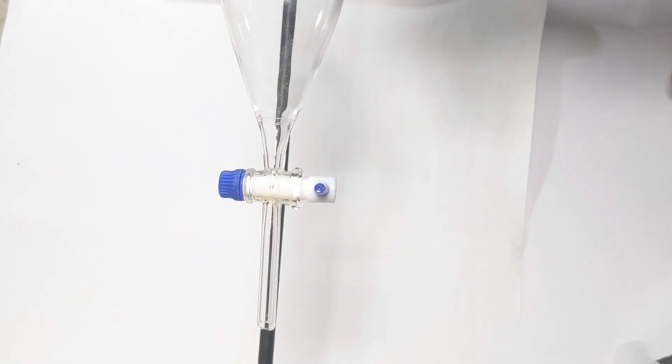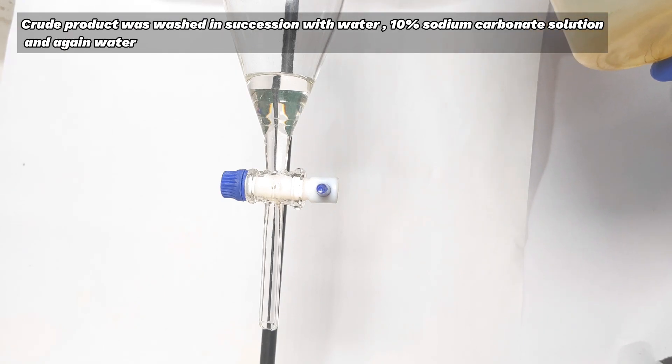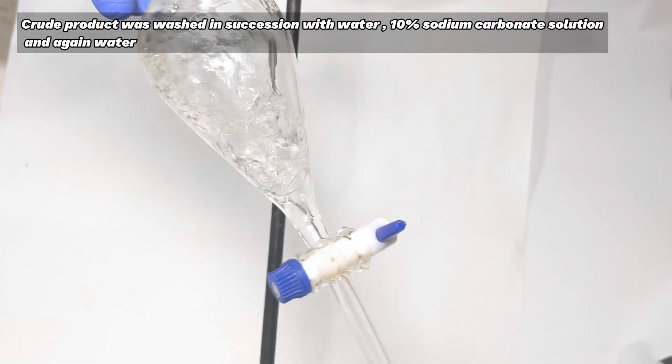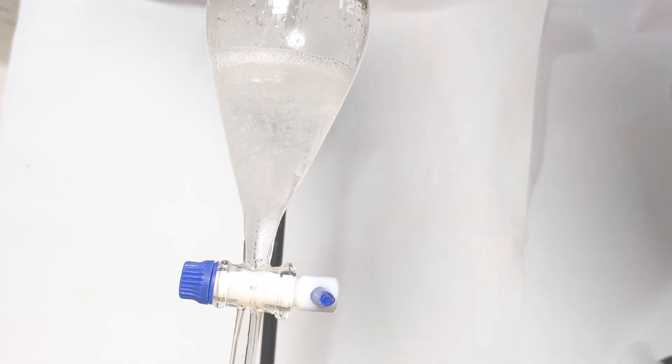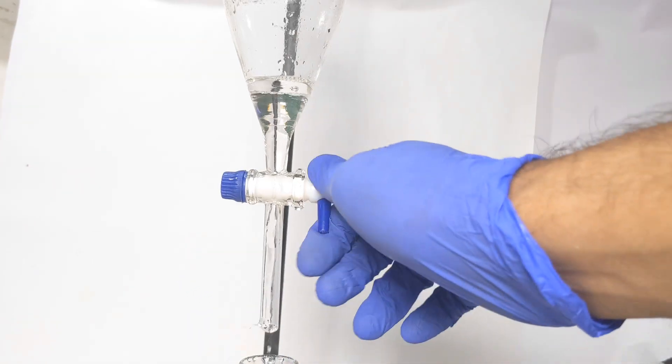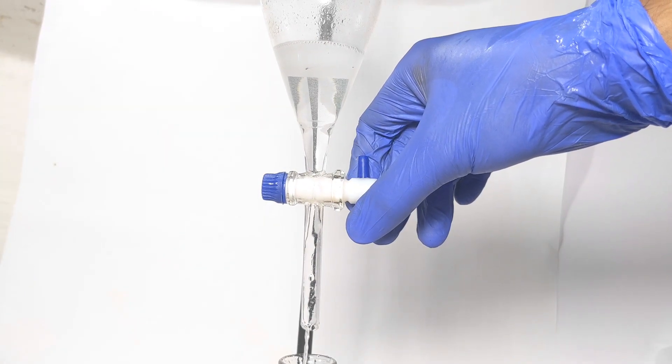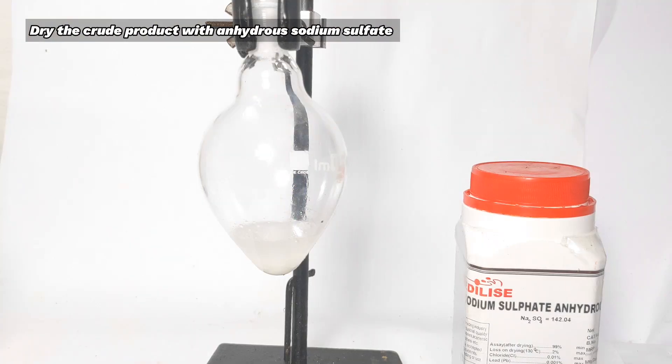It was then transferred to a 125 ml separatory funnel, and then the crude product was washed successively with distilled water, and then with 10% sodium carbonate solution, and again with distilled water. This would give us a somewhat pure product which would be having lot of water in it. So to remove the water we will be adding anhydrous sodium sulphate, and we will get a clear solution.